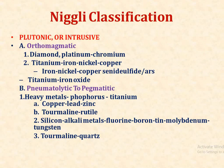Under plutonic or intrusive deposits, the first category is orthomagmatic. In orthomagmatic deposits, the minerals generally deposited include diamond, platinum, chromium, titanium, iron, nickel, copper sulfides, and titanium-iron oxides.